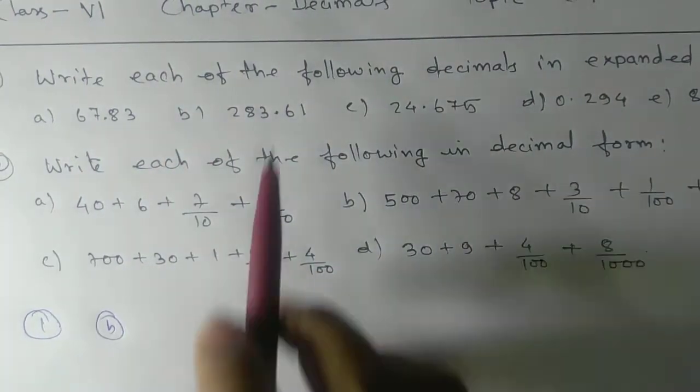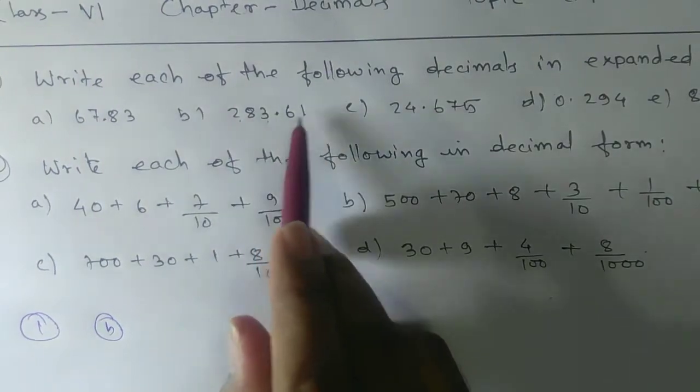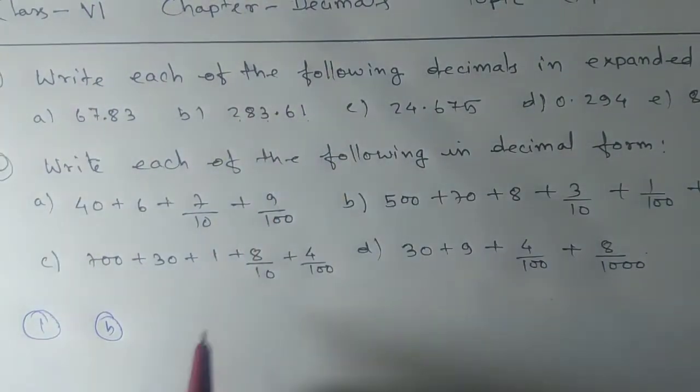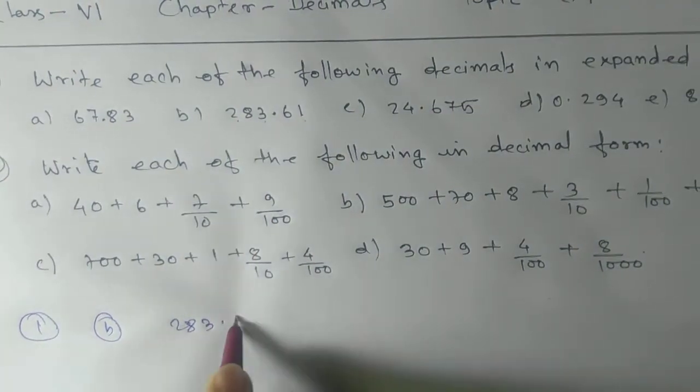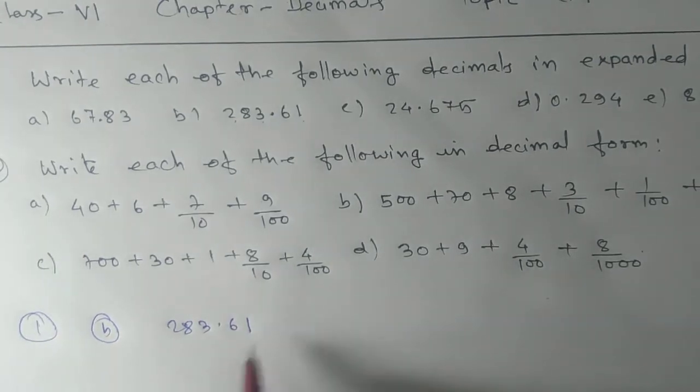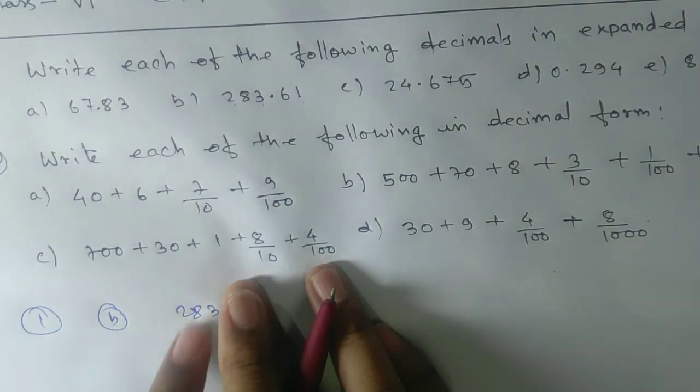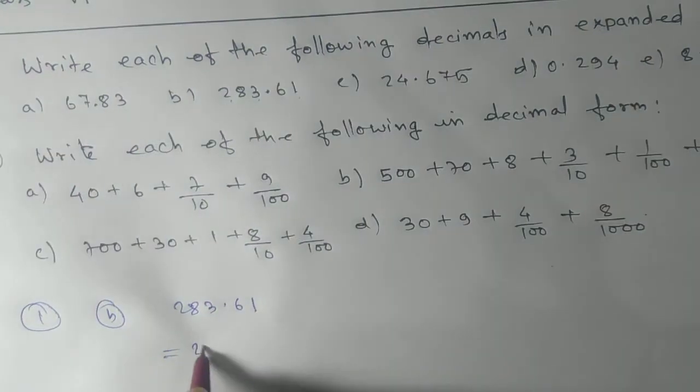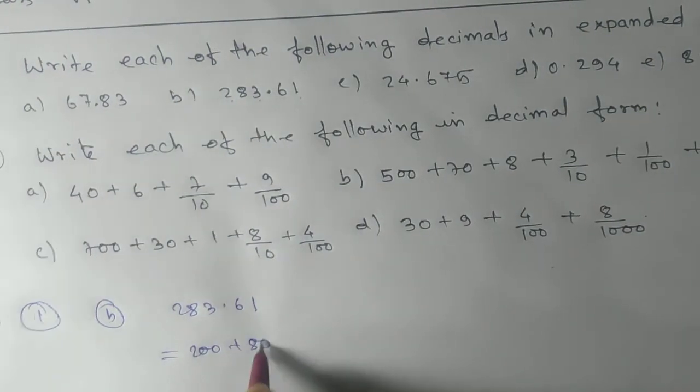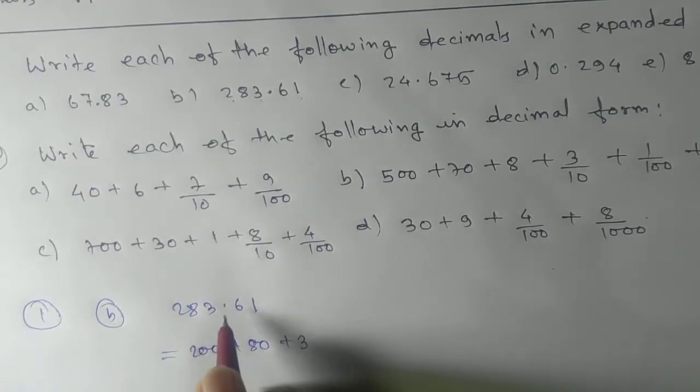Here we have 283.61. You need to expand it. What we are going to do is just forget about the decimal point and expand this. I think you know how to expand: 200 plus 80 plus 3. Do this first, the whole number part, the way you have learned in junior class. That means 200 plus 80 plus 3. After the point, look at the numbers after the point.